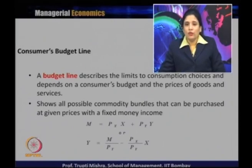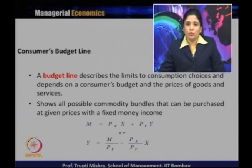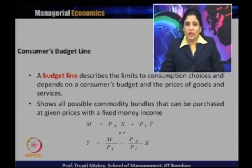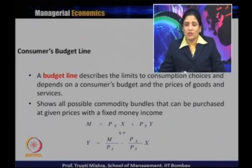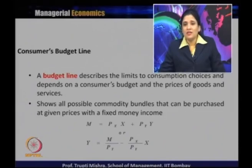If M is the money income and the consumption basket consists of two goods X and Y, the budget line equation is M = PₓX + PᵧY. We assume the entire money income is spent only on goods X and Y, where Pₓ is the price of X, Pᵧ is the price of Y, and X and Y are the respective quantities.